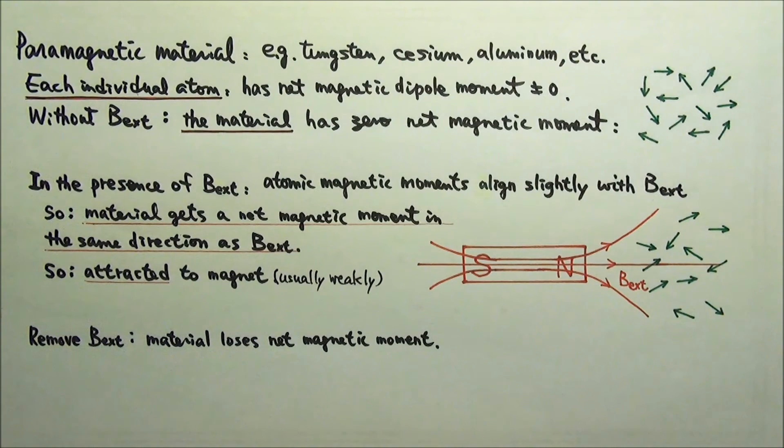Moreover, after the external magnetic field is removed, a paramagnetic material loses its net magnetic dipole moment.